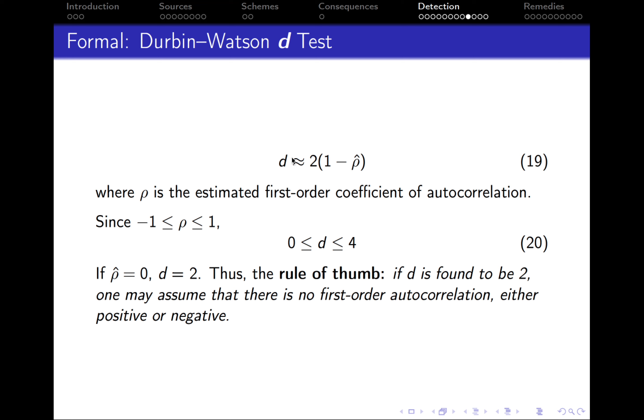And it is calculated in the following way. So D is approximately equal to 2 multiplied by 1 minus the estimated coefficient of autocorrelation. And since, as we've discussed before, the rho coefficient lies between negative 1 and 1, the D statistic will lie between 4 and 0.